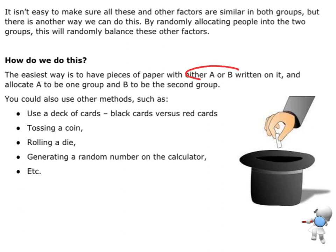One way is to go and get a piece of paper with A or B written on them. If they are in, then we put them all into a bag. If they pull out an A, they're in that group. If they pull out the B, they're in that group.